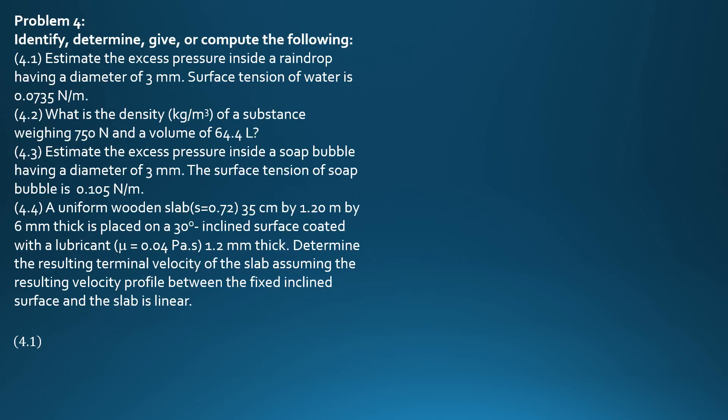Example 4. Identify, determine, give, or compute the following. Estimate the excess pressure inside a raindrop having a diameter of 3 mm. The surface tension of water is 0.0735 N per meter.